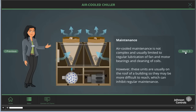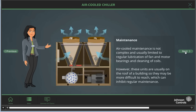Air-cooled chiller maintenance. Air-cooled maintenance is not complex and is usually limited to regular lubrication of the fan and motor bearings and the cleaning of coils. However, these units are usually on the roof of a building, so they may be difficult to reach, which can inhibit regular maintenance.